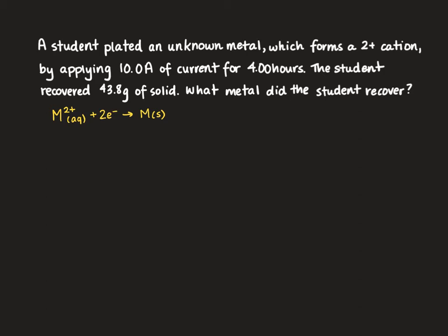Now we're going to actually solve our problem. To start, we put down our 43.8 grams of M. I want to get grams per mole, so I need one mole of metal M on the bottom of this next fraction, and I can compare that to electrons. I'm going to use two moles of electrons for every one mole of metal that I produce.